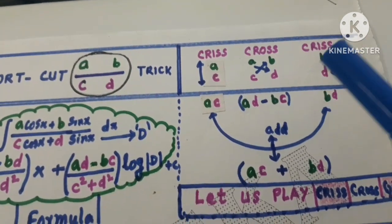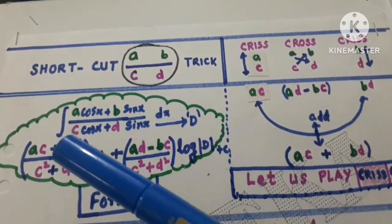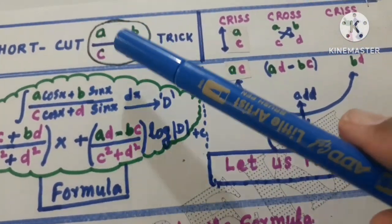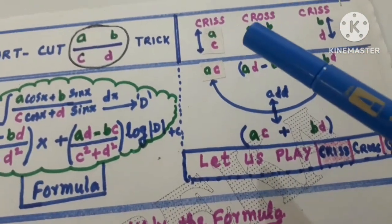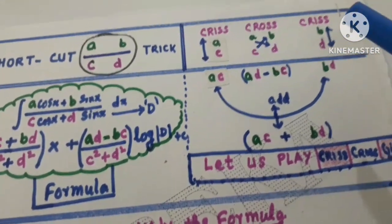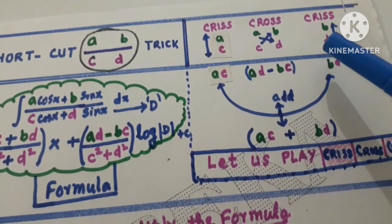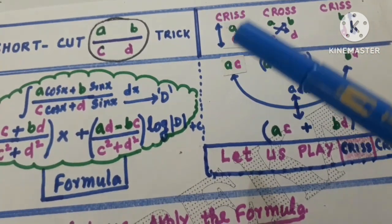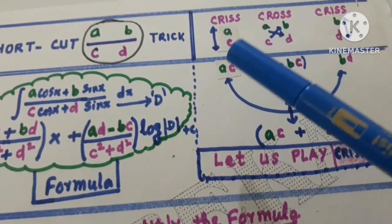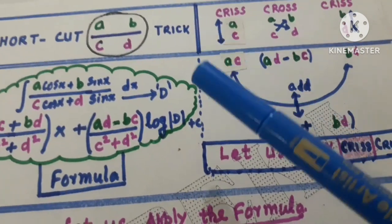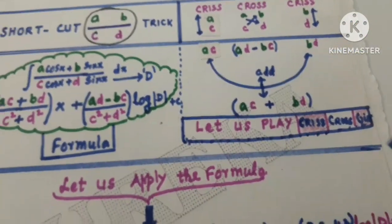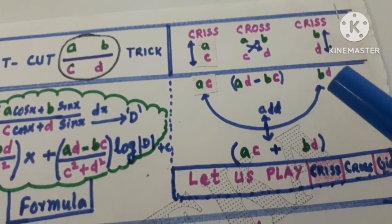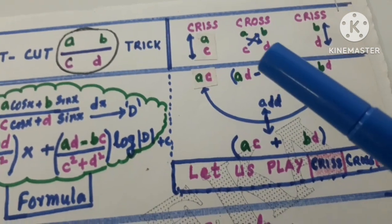Why I said criss cross criss — look here: this is a over c, and this is b over d. Write a over c, b over d again. Make an arrow — this is called criss cross. Multiply a and c — this is criss criss cross. Multiply: a·c gives ac, b·d gives bd. Then cross multiply: a·d minus b·c.